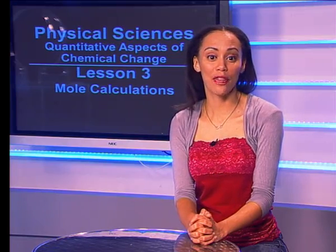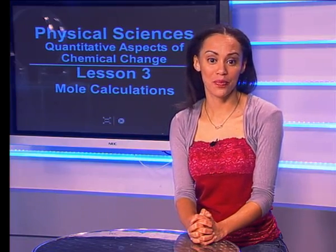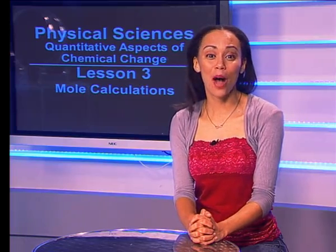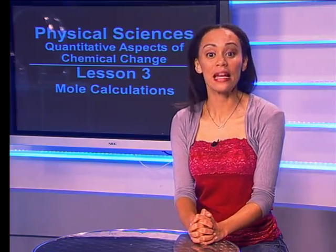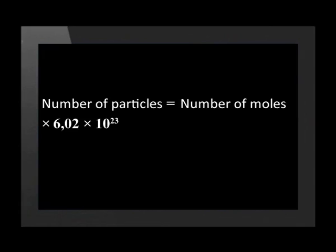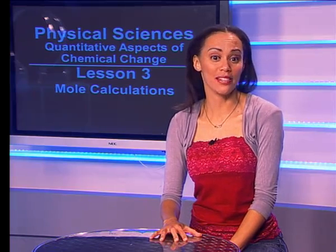Thank you, Keke. Now it is time to look at the relationship between the number of moles and the number of particles. We already know that the amount of particles in 1 mole of carbon-12 is that big number called Avogadro's number — it equals 6.02 × 10²³. This means there will be 6.02 × 10²³ carbon atoms in 1 mole of carbon. We can express this in an equation: the number of particles equals the number of moles multiplied by 6.02 × 10²³. In symbols, capital N equals small n multiplied by Nₐ. This formula can be used to determine the number of particles in any compound.